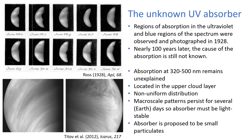The presence of an absorber on Venus has been known about since 1928. You can see here in these photos there are some darker and lighter regions, and again here — this is a much more recent photo — you've got the dark areas and the light areas. Obviously the dark places are where the absorber is.